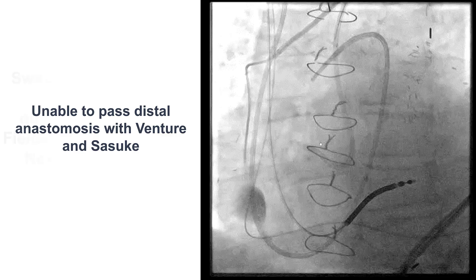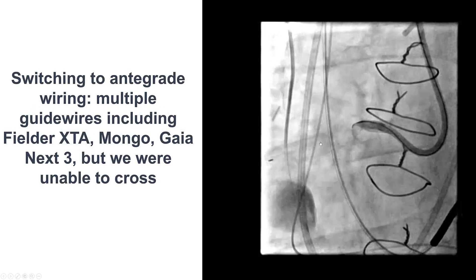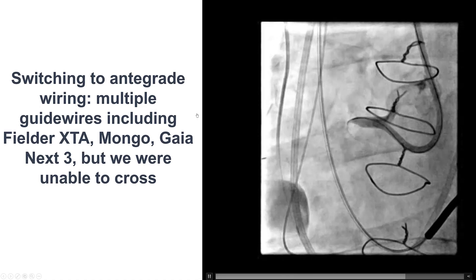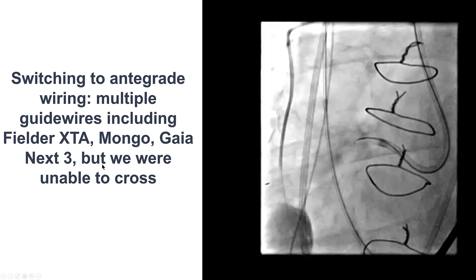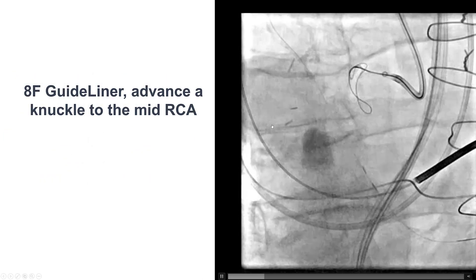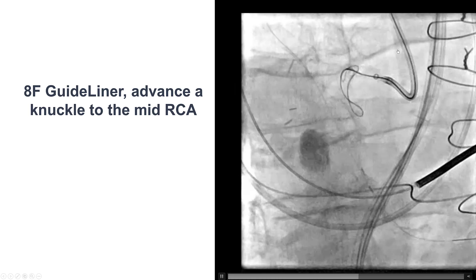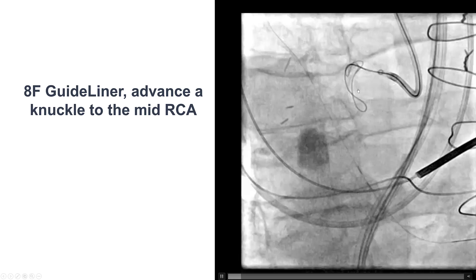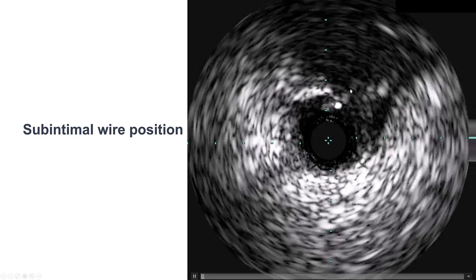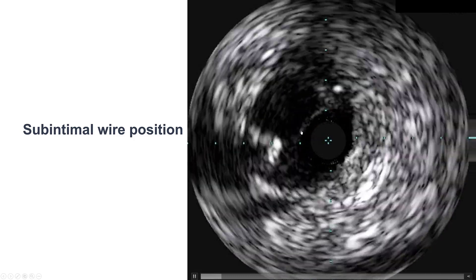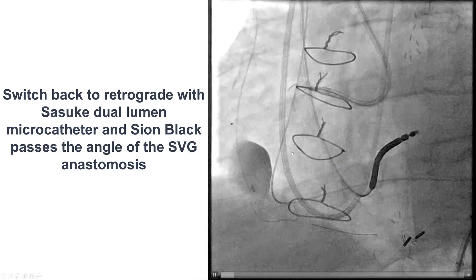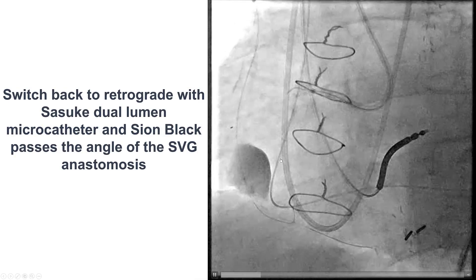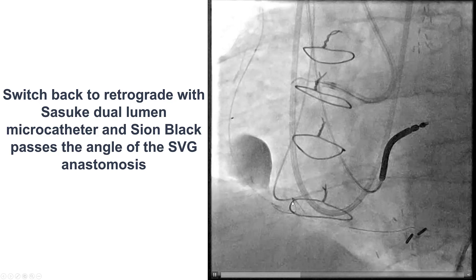That's why we then tried antegrade crossing. We had a lot of difficulty advancing a guide wire antegrade. We used multiple guide wires, including Fielder XTA, Mongo, Gion X3, without being able to cross. But eventually, we were able to knuckle a guide wire and advance it towards the mid-right coronary artery using support by an 8-French guide extension. This is an IVUS within that knuckled guide wire showing that we're in the sub-intimal position. And then we had a lot of difficulty advancing further down, which is why we decided to go and try retrograde again.